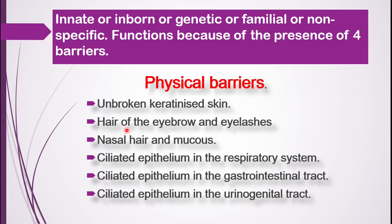The second physical barrier is the hair on the eyebrows as well as the eyelashes. Your eyes can become exposed to a number of pathogens, but some of these microbes are prevented from entering the eye due to the eyebrow and eyelash hair. Dust particles falling from above get trapped there — they are not just signs of beauty but also physical barriers.